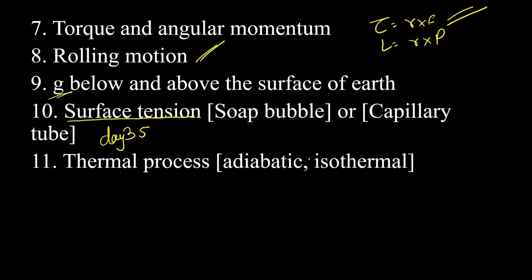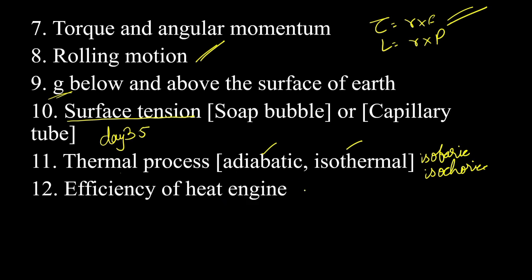Thermal processes — there are four thermodynamic processes, including the isothermal process. Efficiency of a heat engine: eta is equal to 1 minus T2 by T1. This is the formula for efficiency of a heat engine and heat engine as a refrigerator cycle.